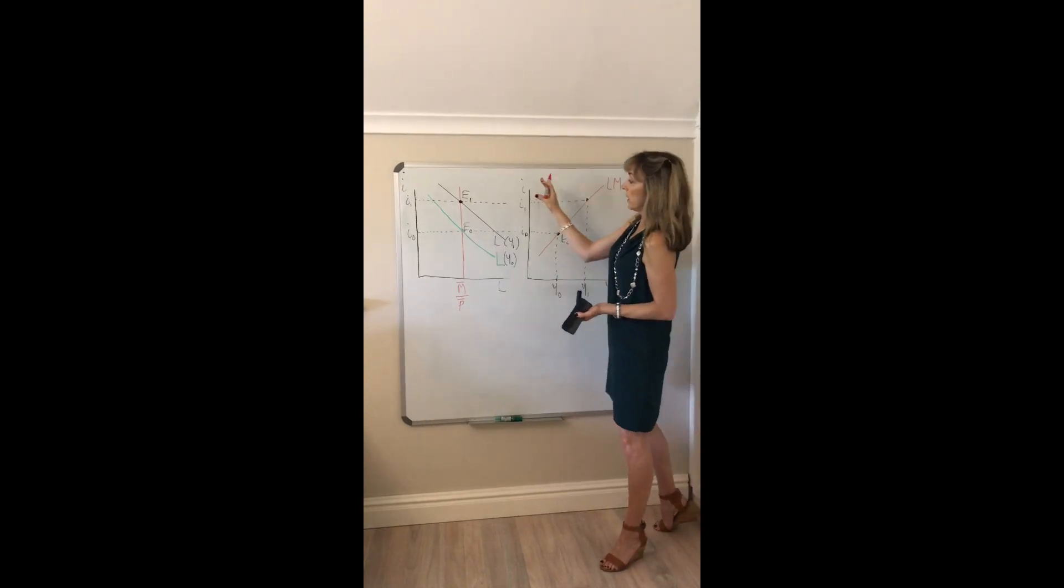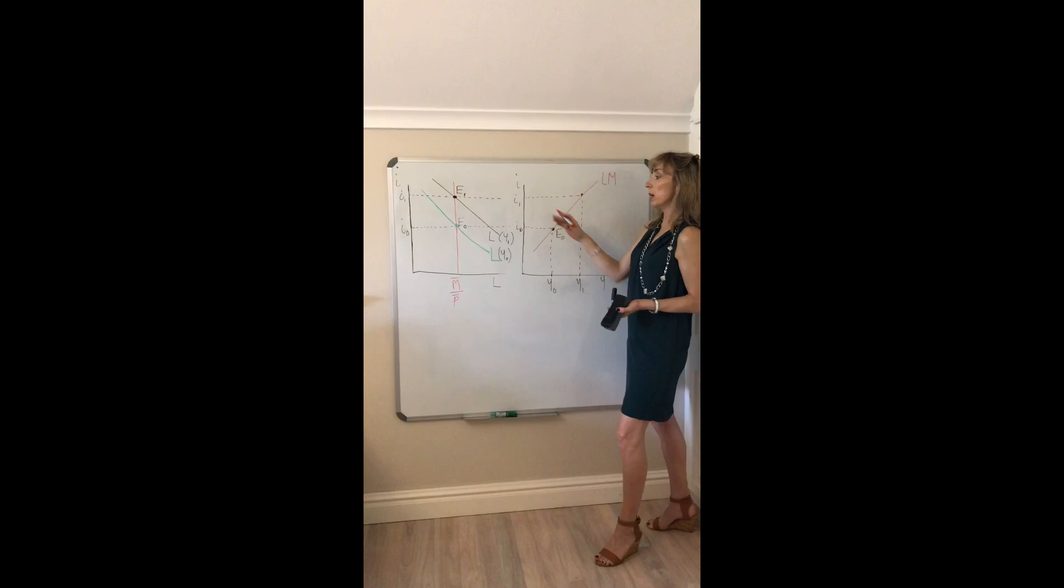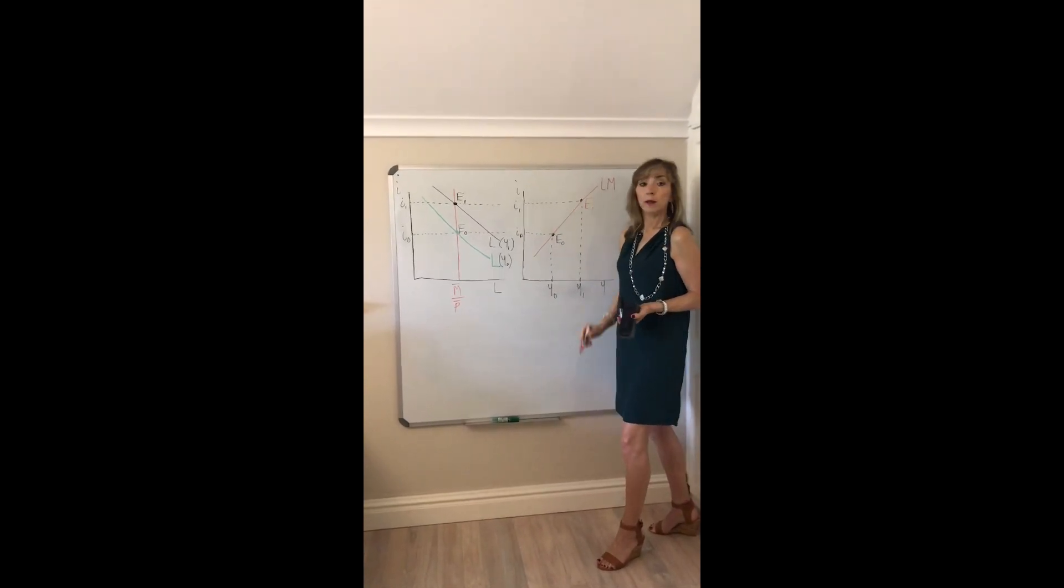What does that show you? Two combinations of the interest rates and income that clear the money market or that are associated with equilibrium in the money market.